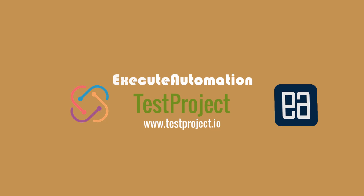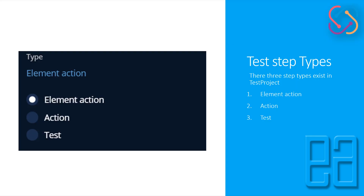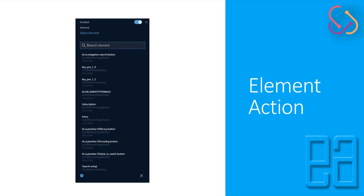Welcome to the next video of our TestProject course. In this video, we'll be talking about working with test step types. There are three step types in TestProject: element actions, action, and test. As discussed in our previous video, we skipped this particular option within our test setup because it is a somewhat vast topic compared to the other options we discussed.